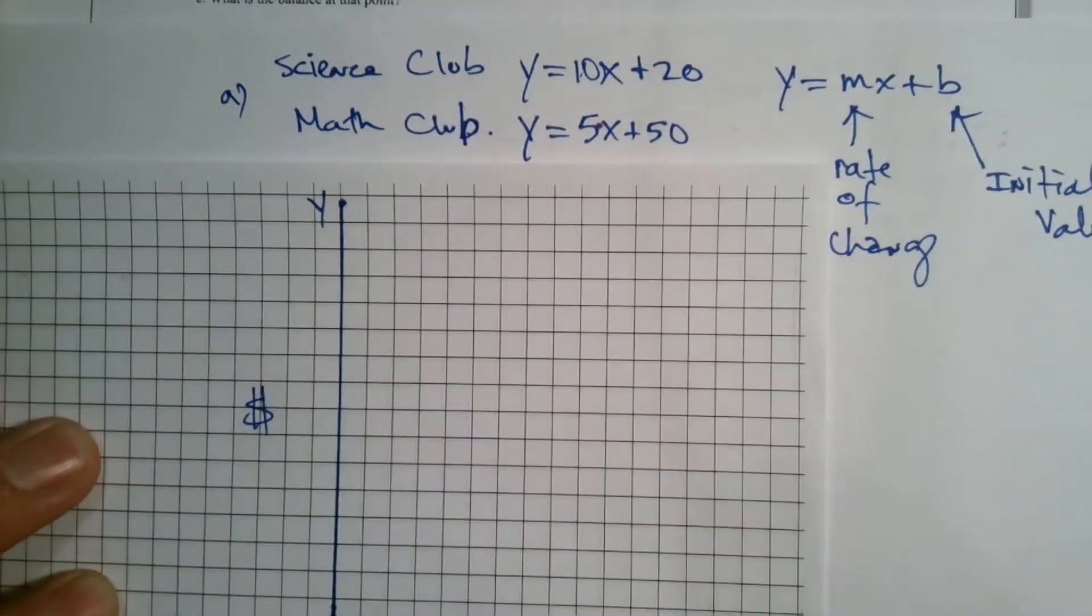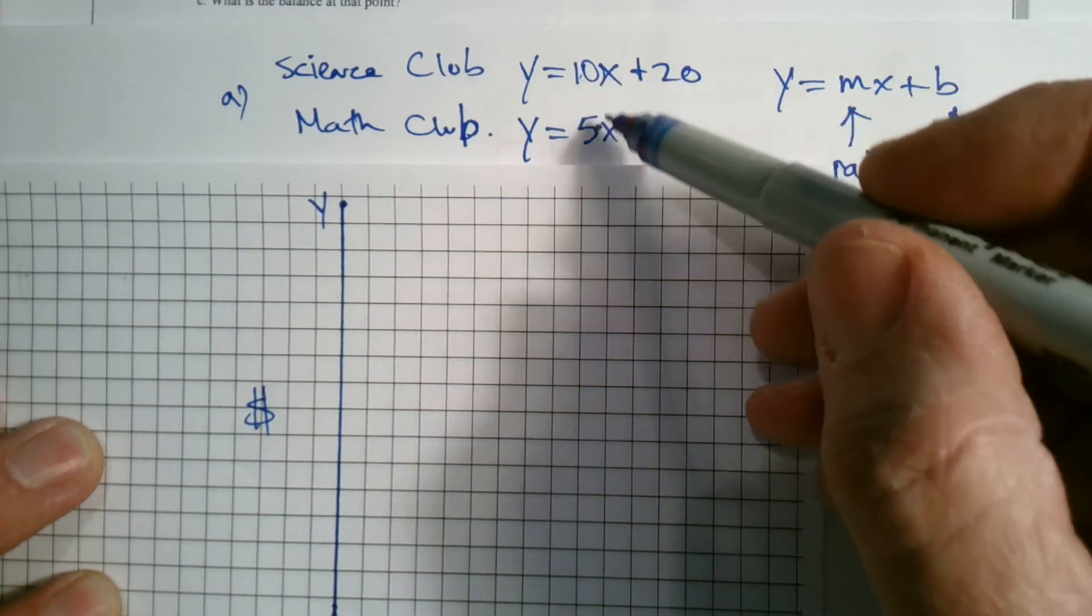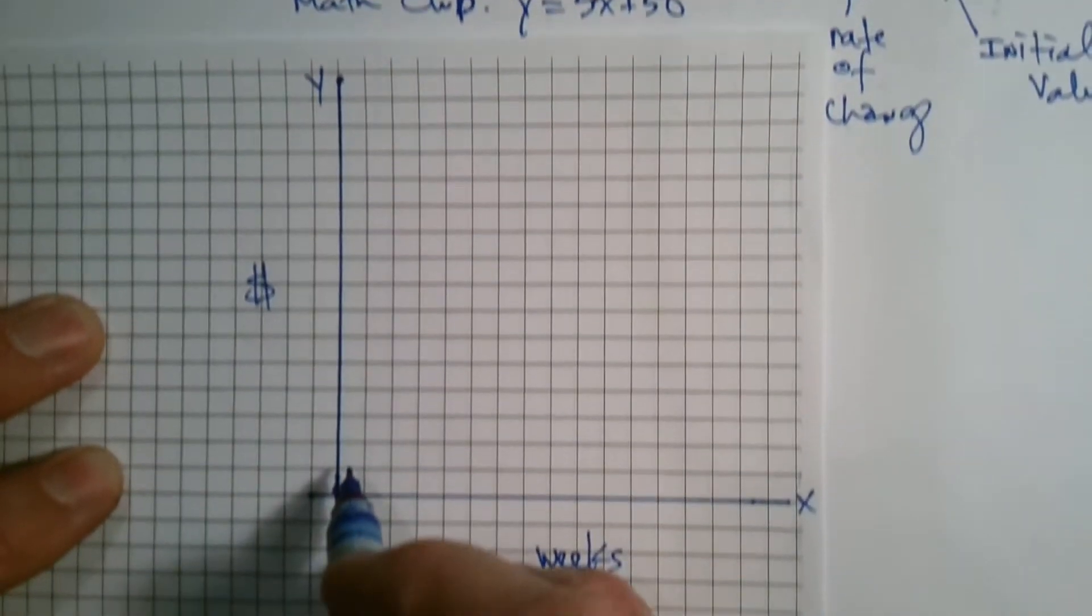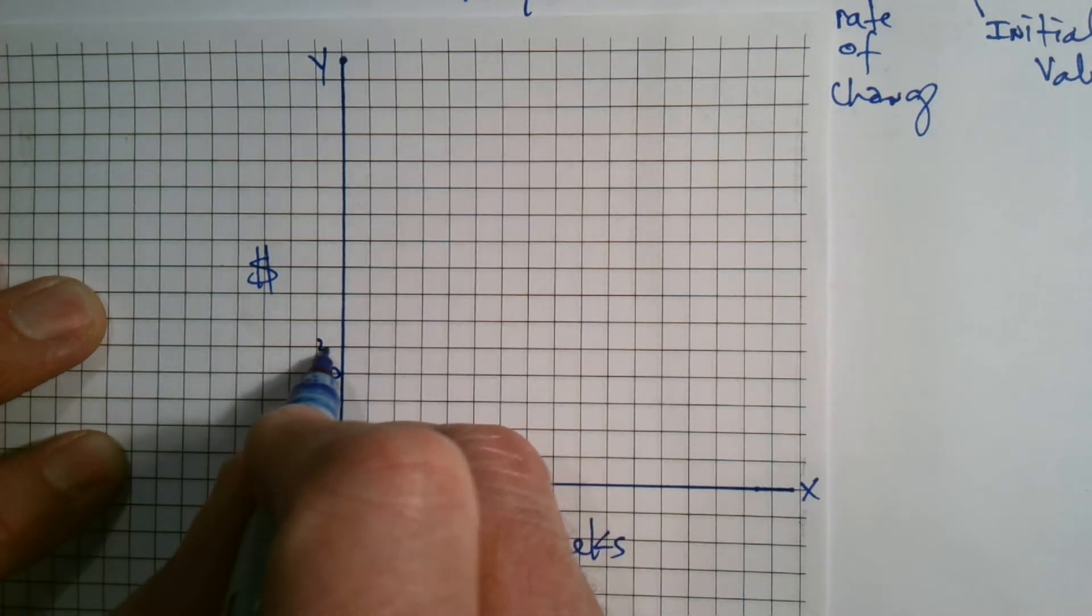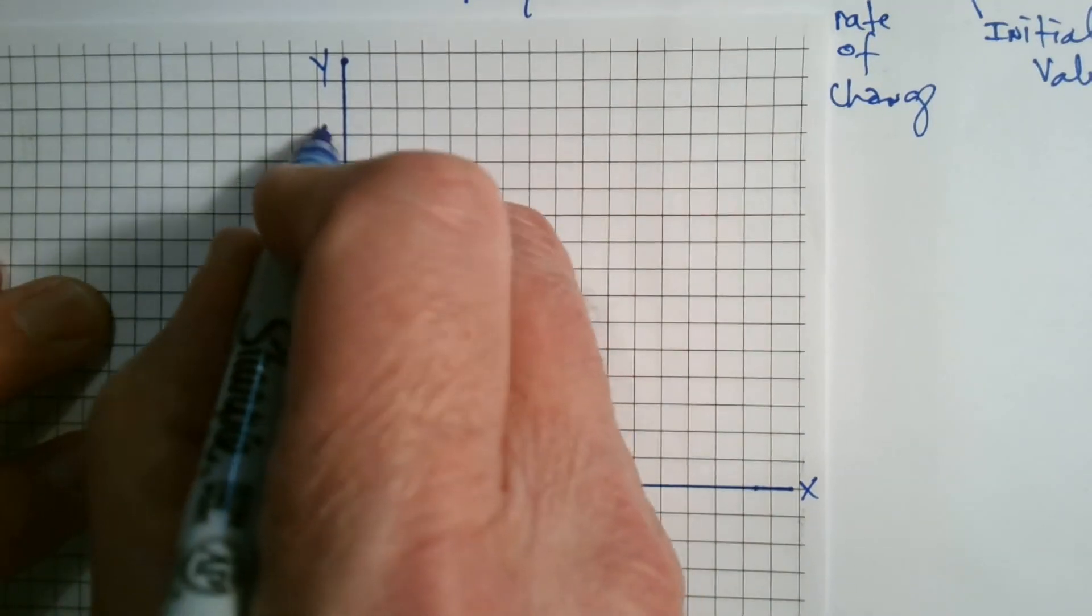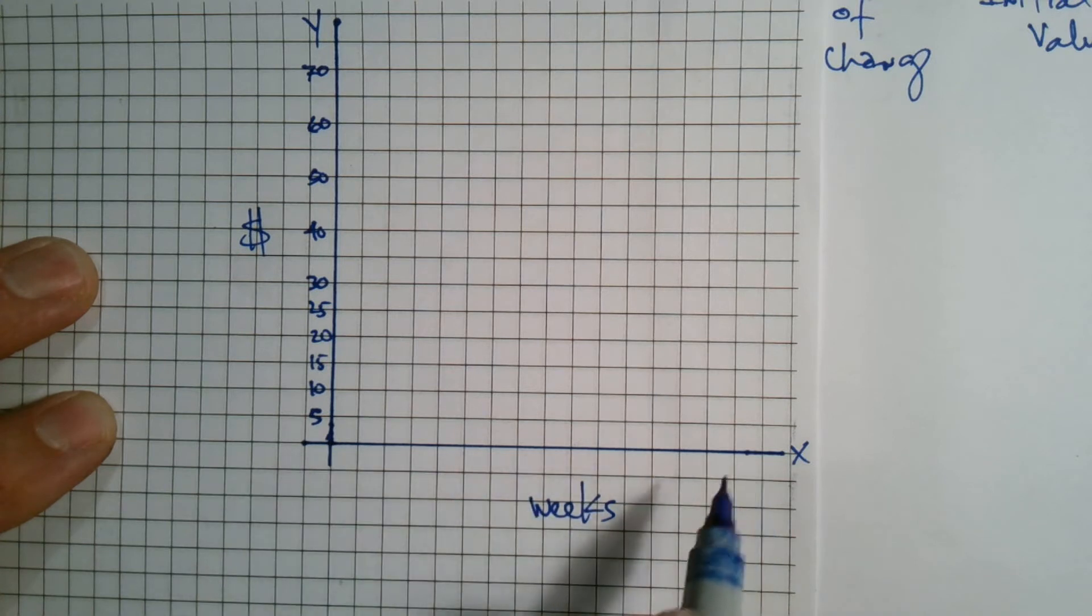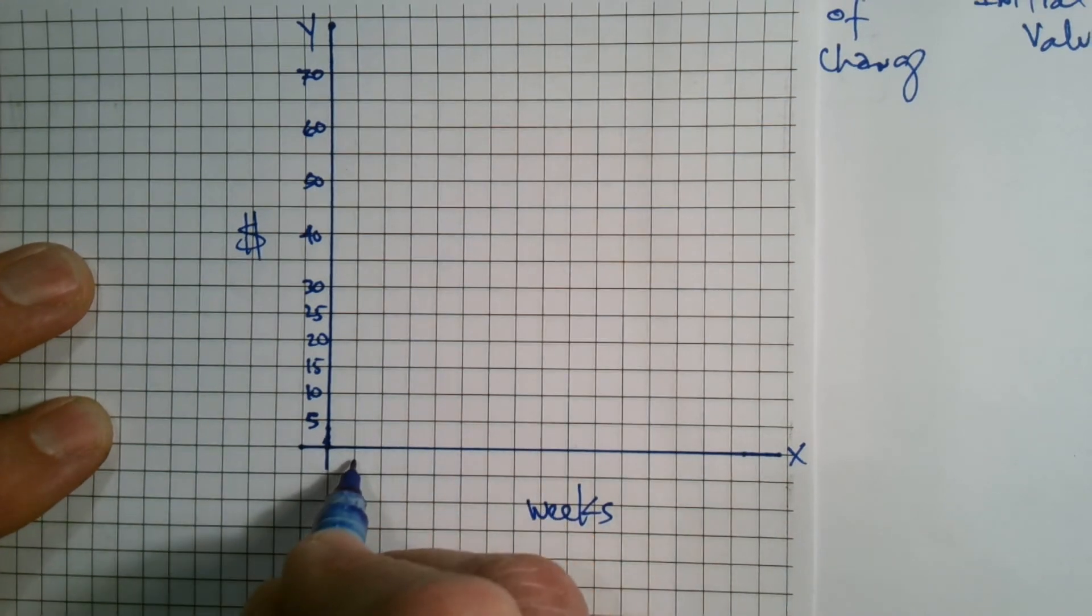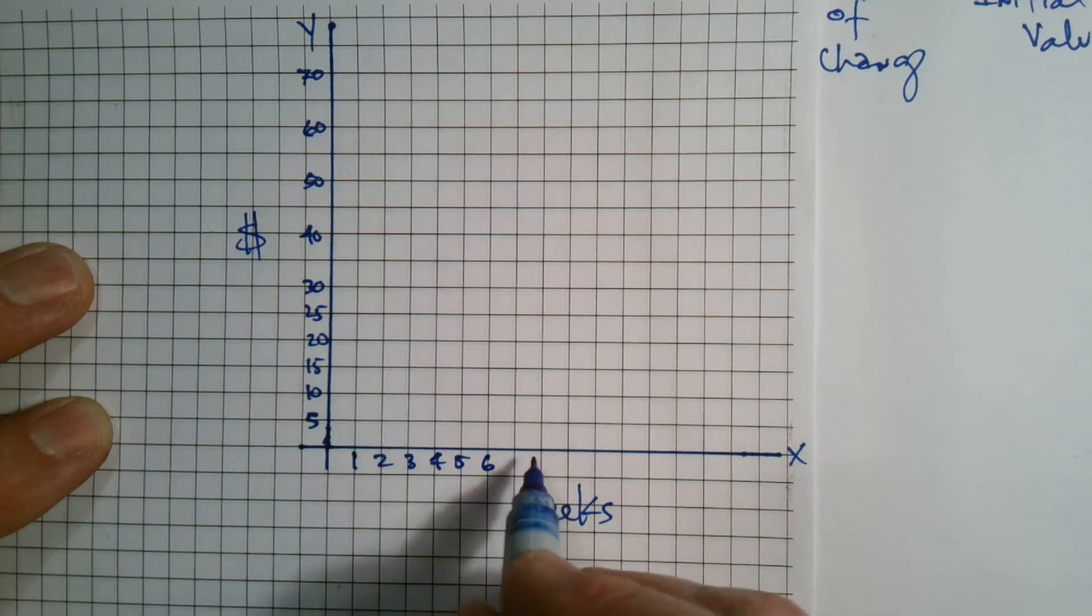Let's think about my scaling. If my initial value was 20 on the science club and 50 on the math club, and they're going up this one by 10 and this one by 5, I probably want to have my scaling by 5s. So as far as money, 5, 10, 15, 20, 25, 30, skip, 40, skip again, 50, 60, 70. And then my X scaling, weeks, I'm going to just go up by 1: 1, 2, 3, 4, 5, 6, so on and so forth, 7, and we'll go from there.